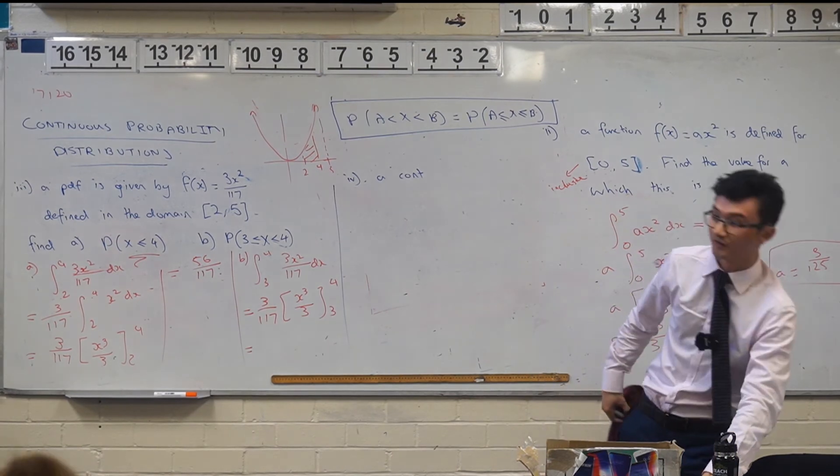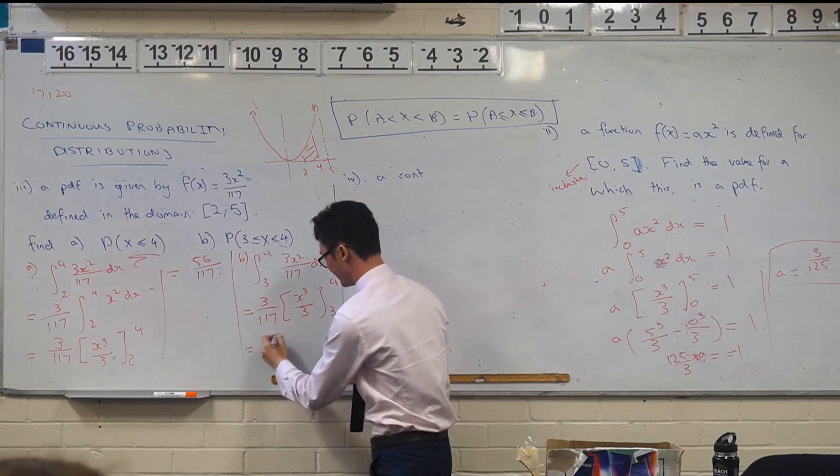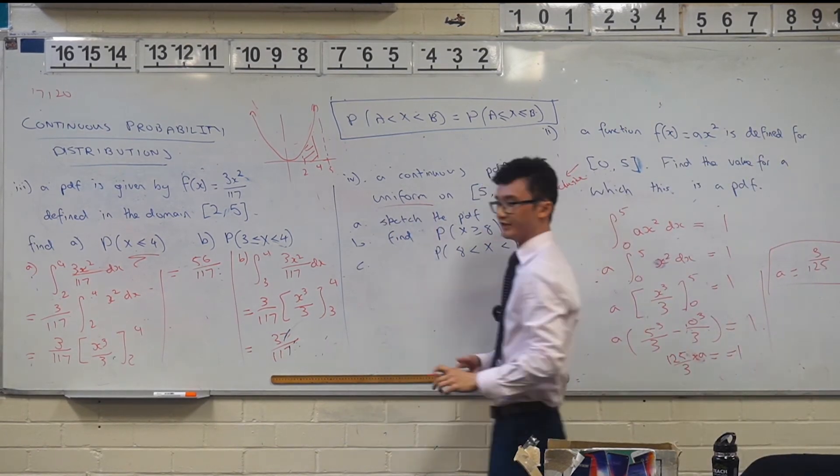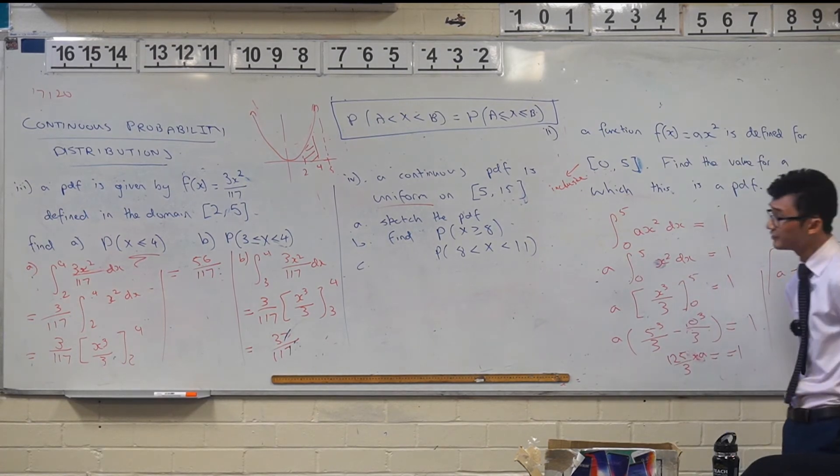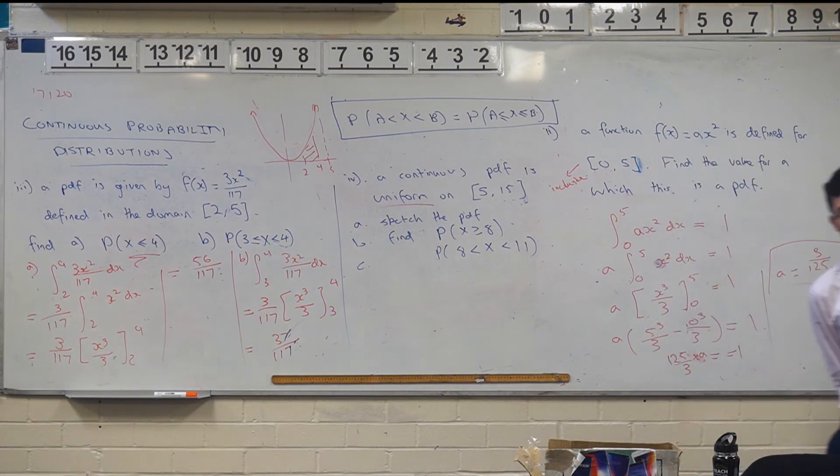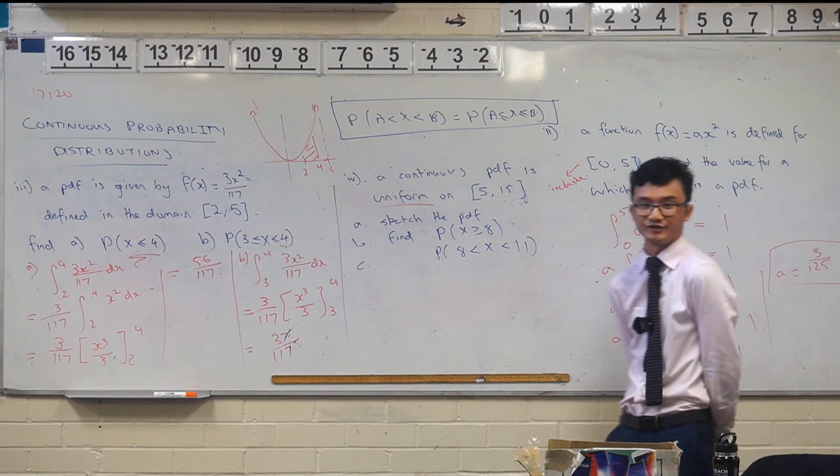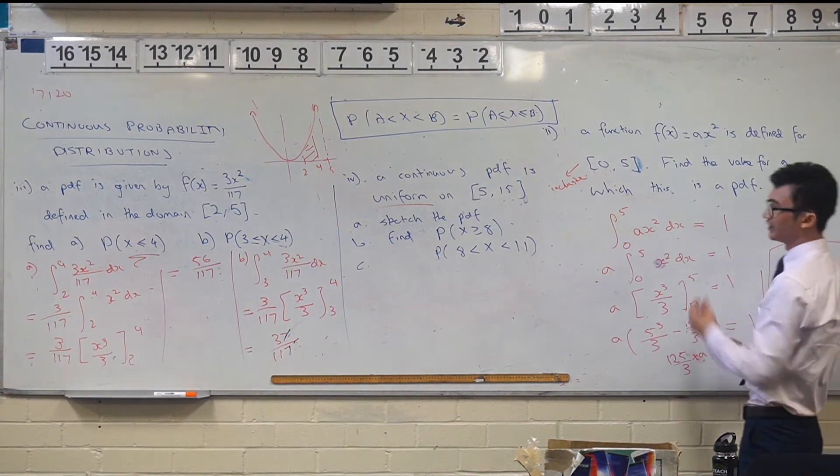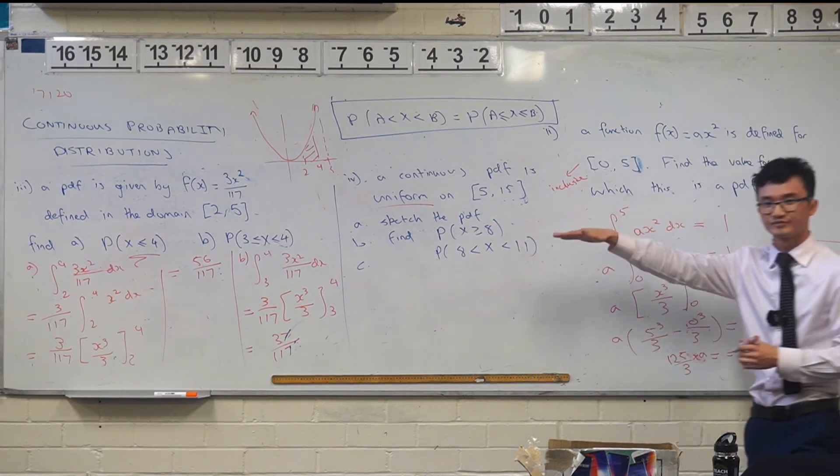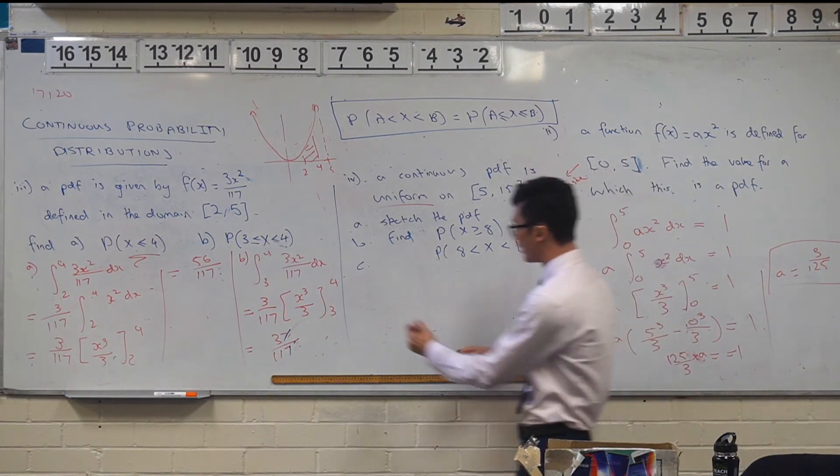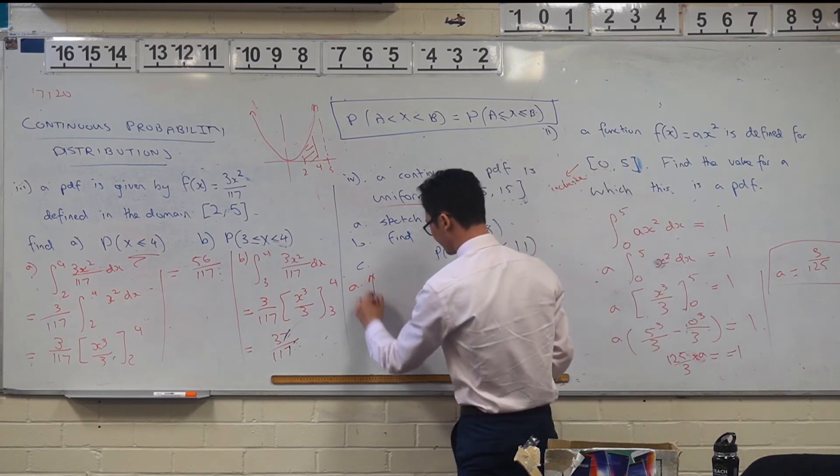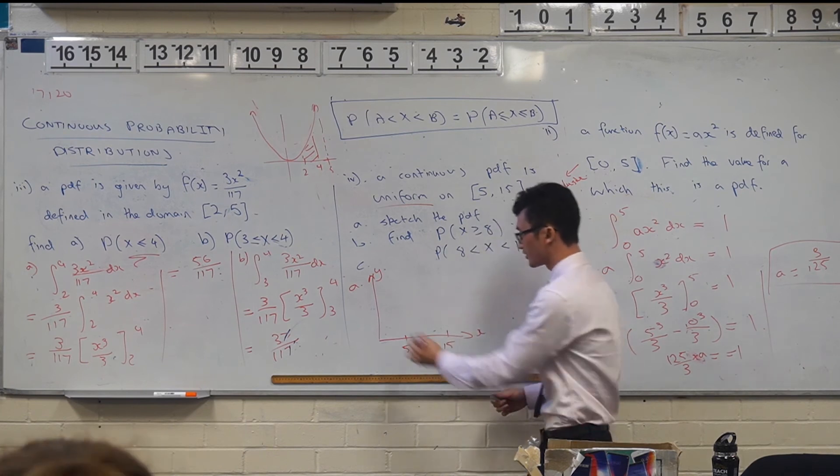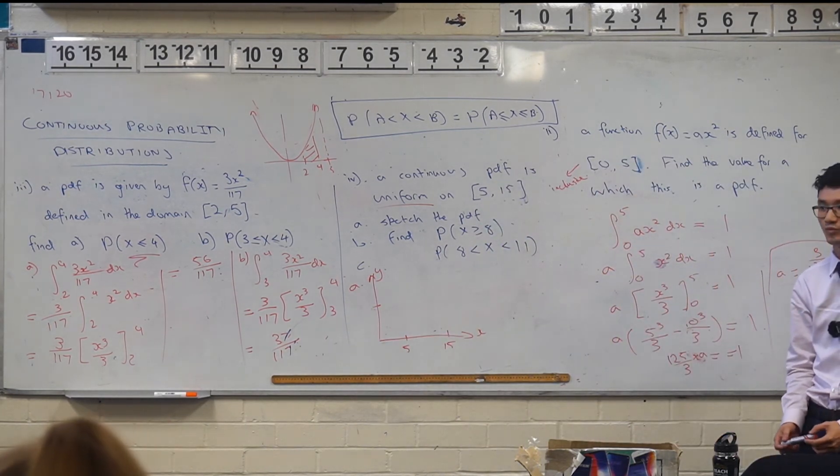Last one. Last thing that we're going to talk about is something called a uniform probability density function. So again, we looked at this in year 11 advance, but it's been a while since then. So when a probability distribution is uniform, all of the outcomes actually have the same probability. So a very good example of that is, for example, rolling a die. All of them, all the sides have a one in six chance of occurring. Now, what would that look like graphically? Well, graphically, what do you think it would look like if all the probabilities were the same? It would just be a horizontal line.